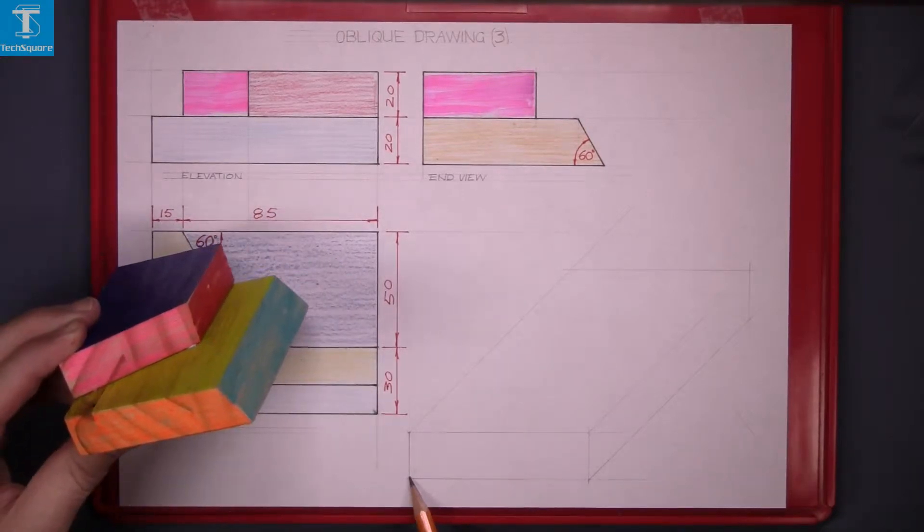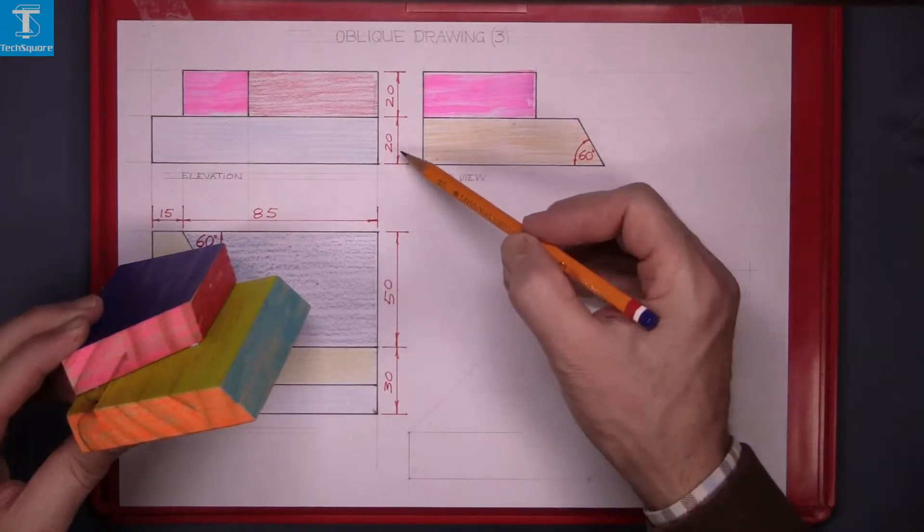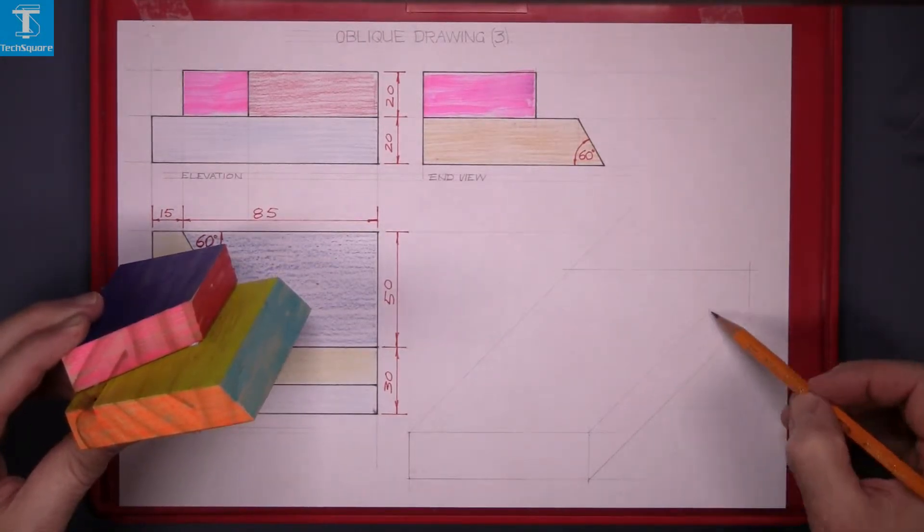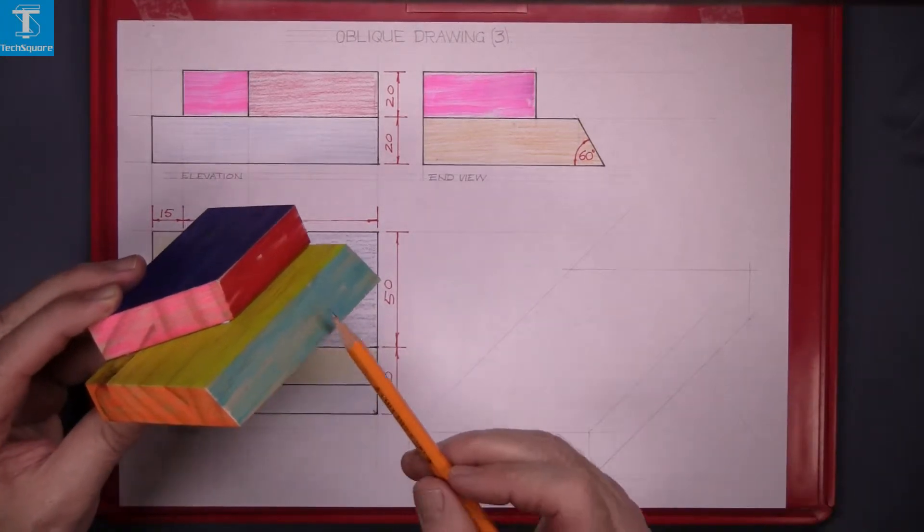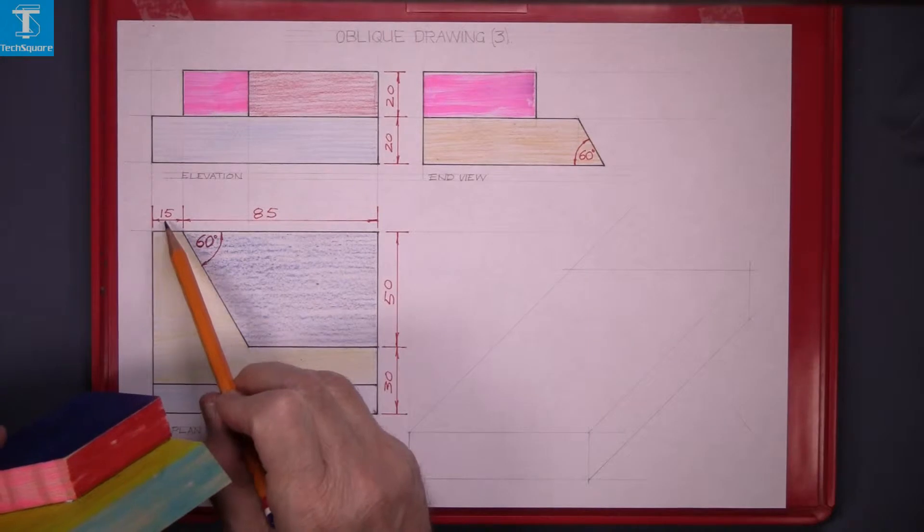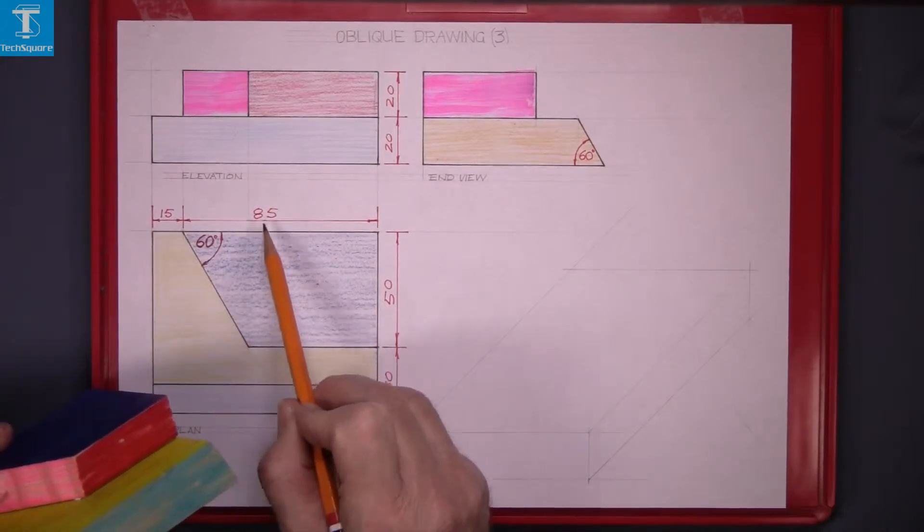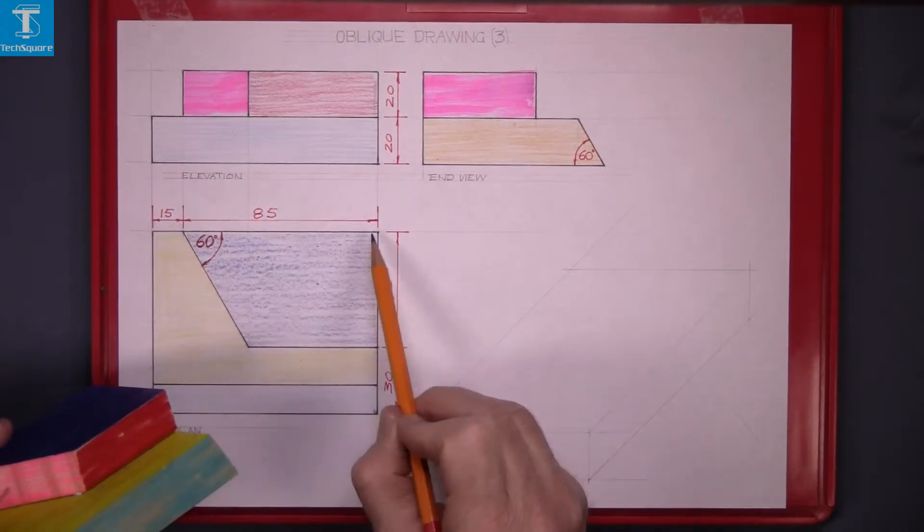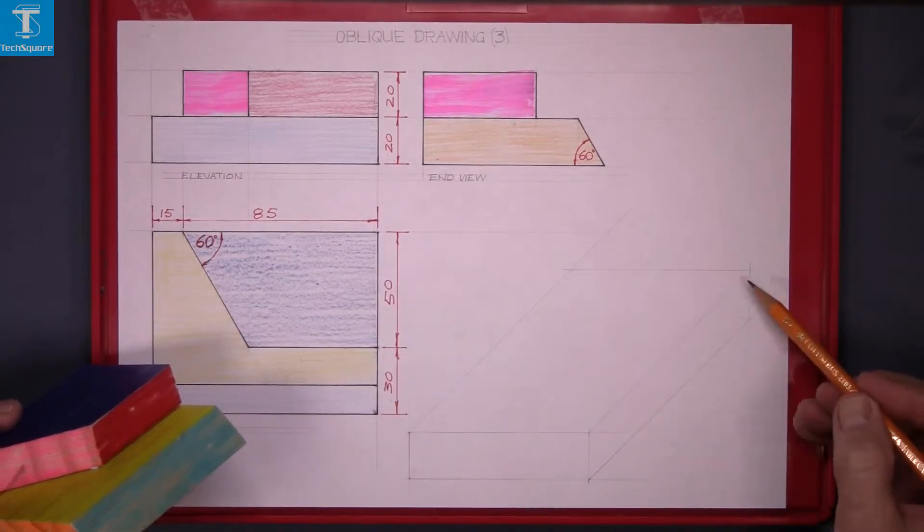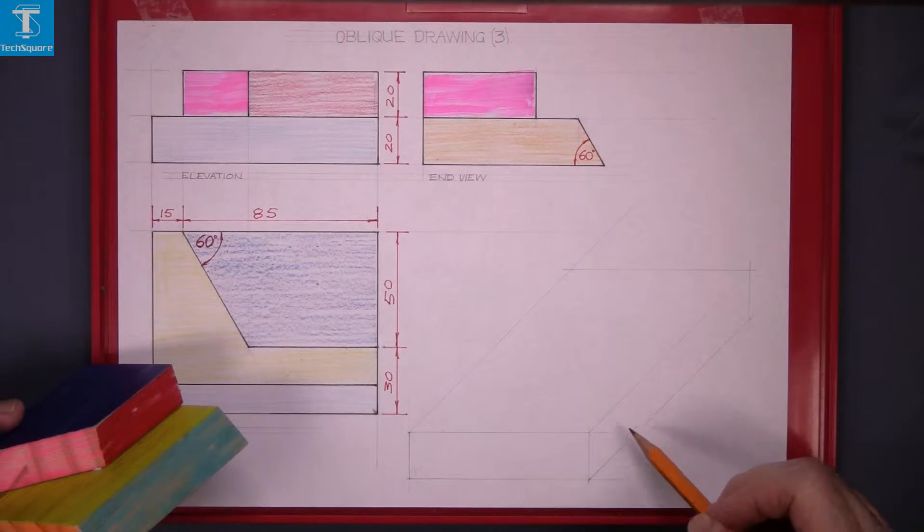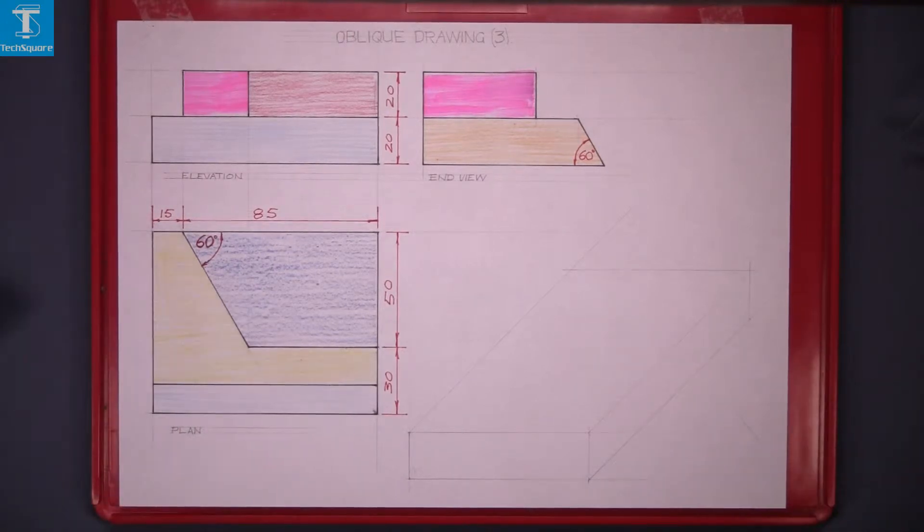Mark off 80 across here and then up the height here which is 20 and then back at 45 degrees. The length of the piece here is 15 plus 85 is 100. Step off 100 along the 45 degree line and line in lightly.